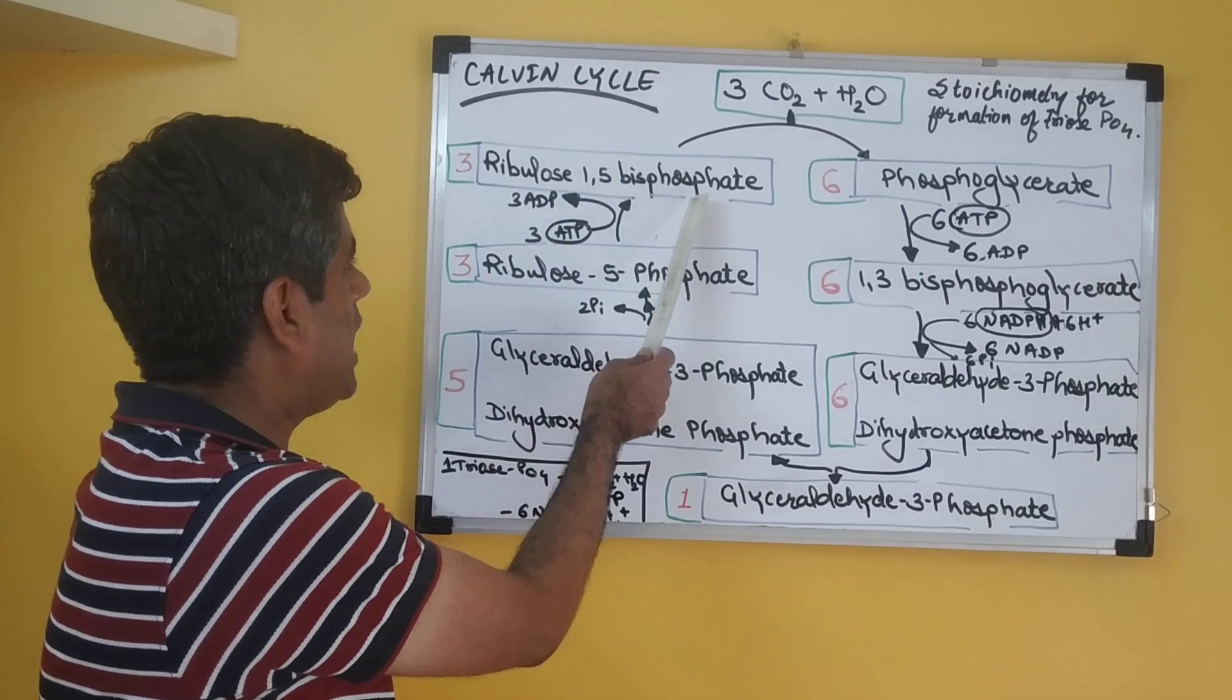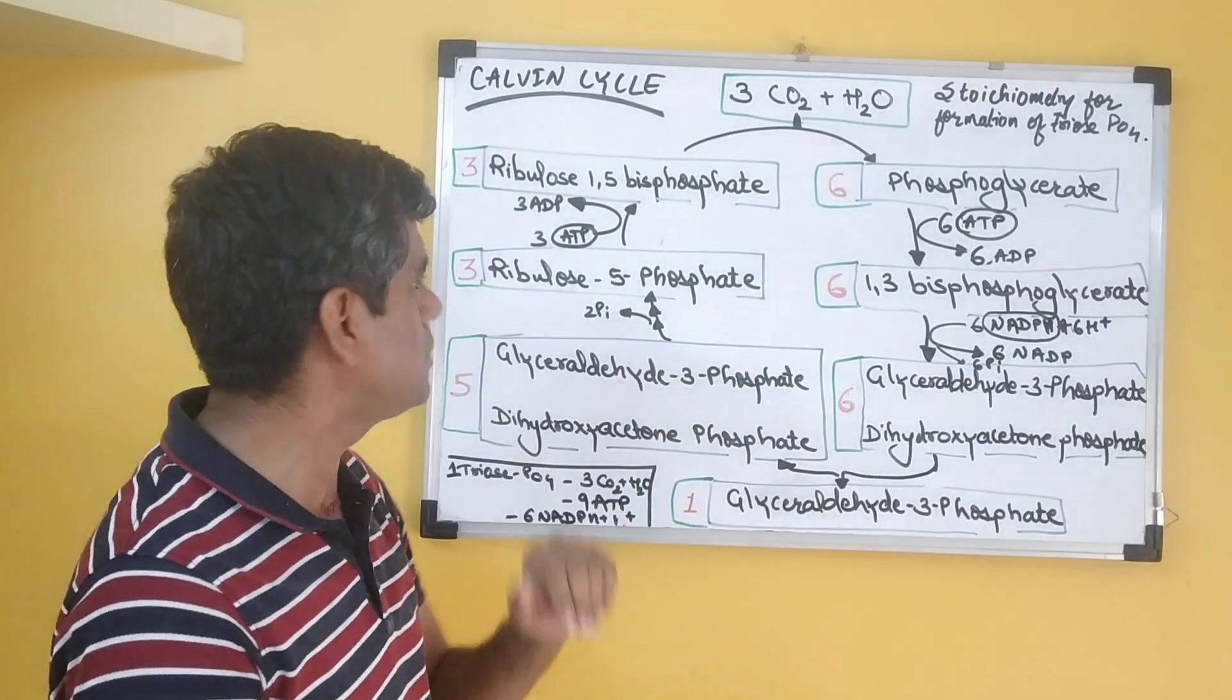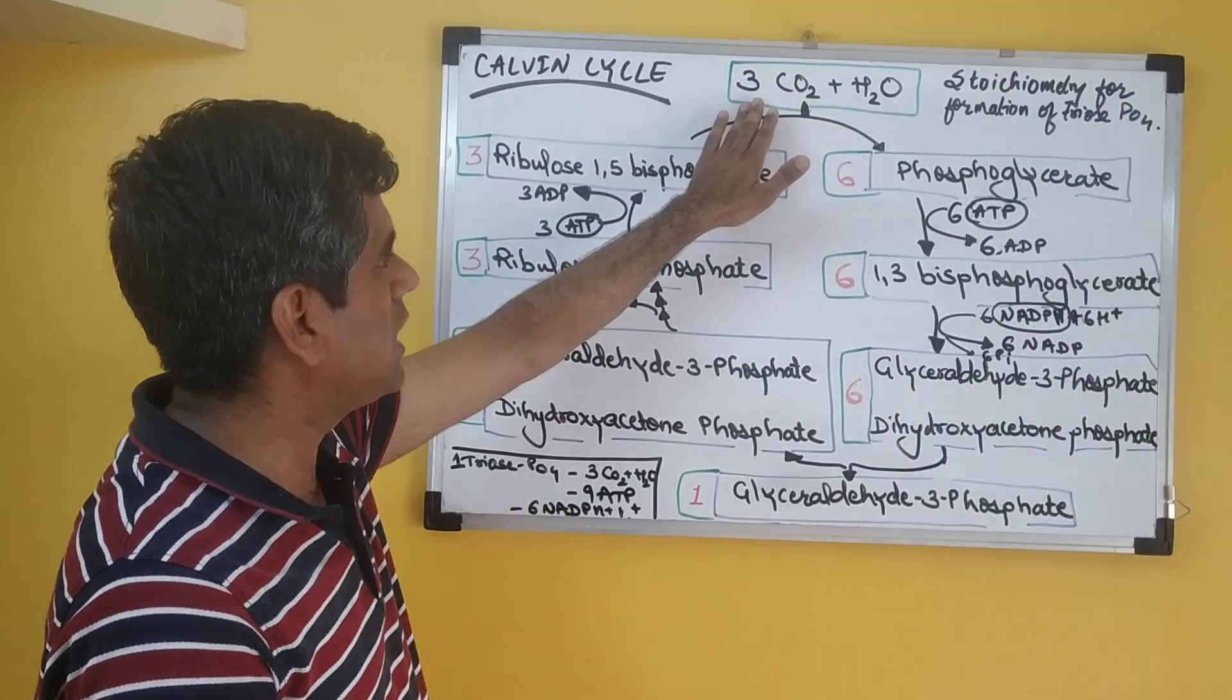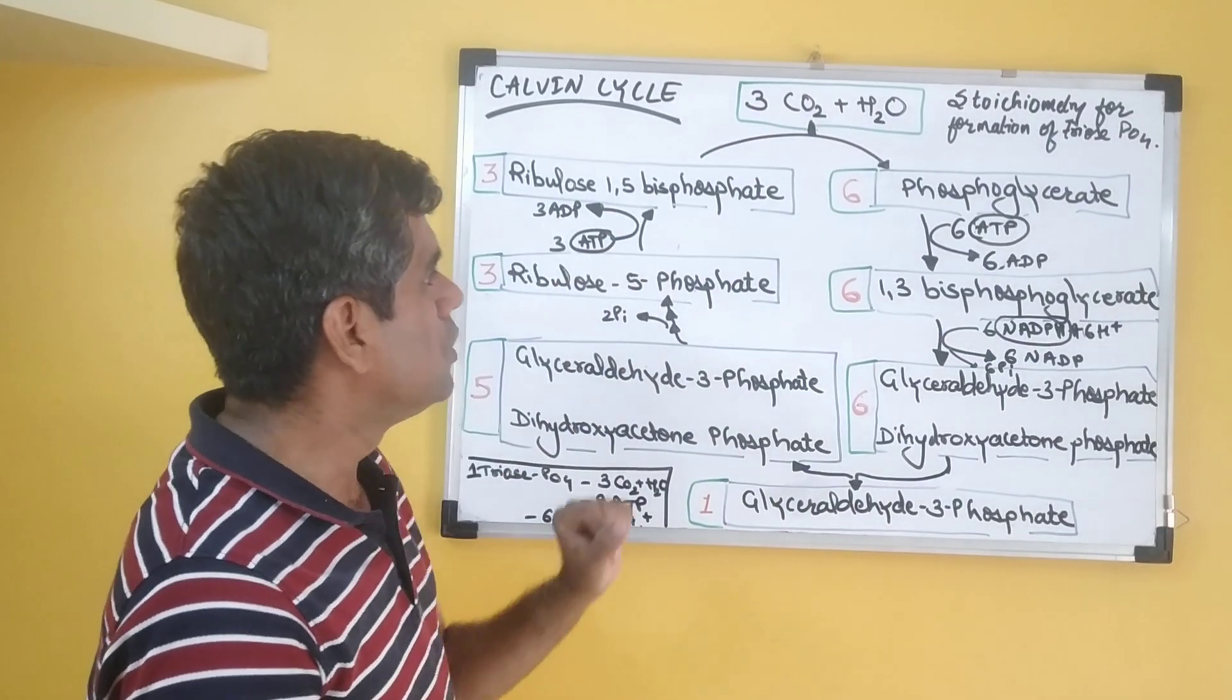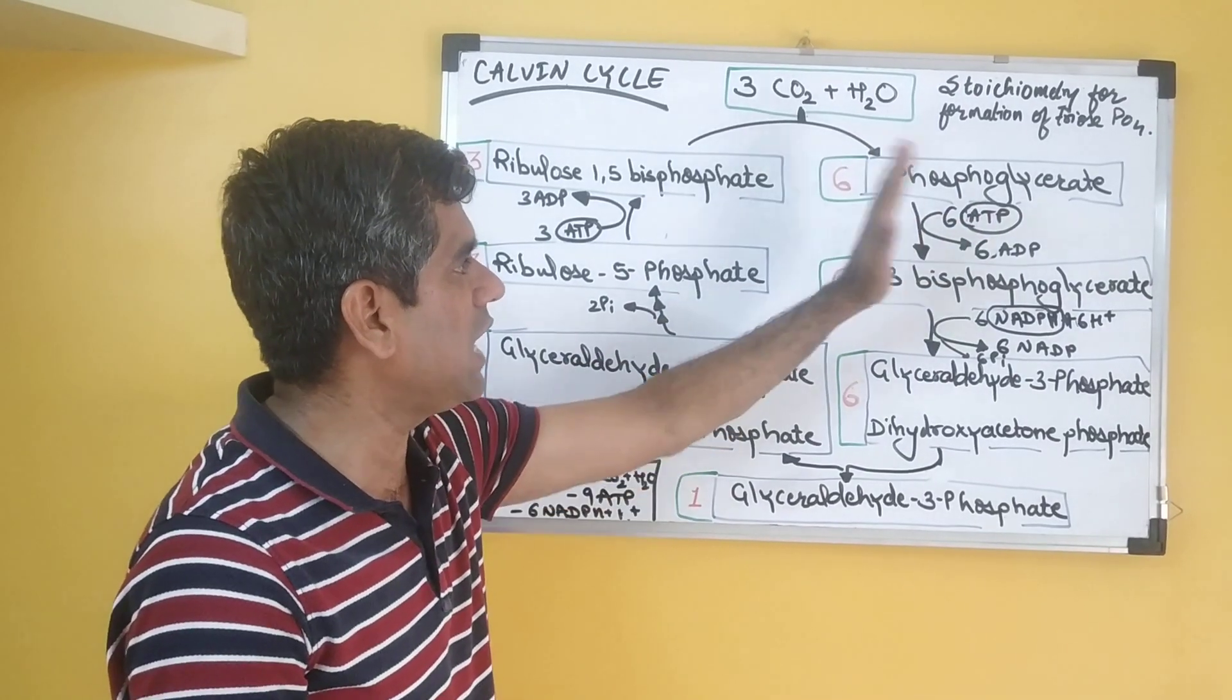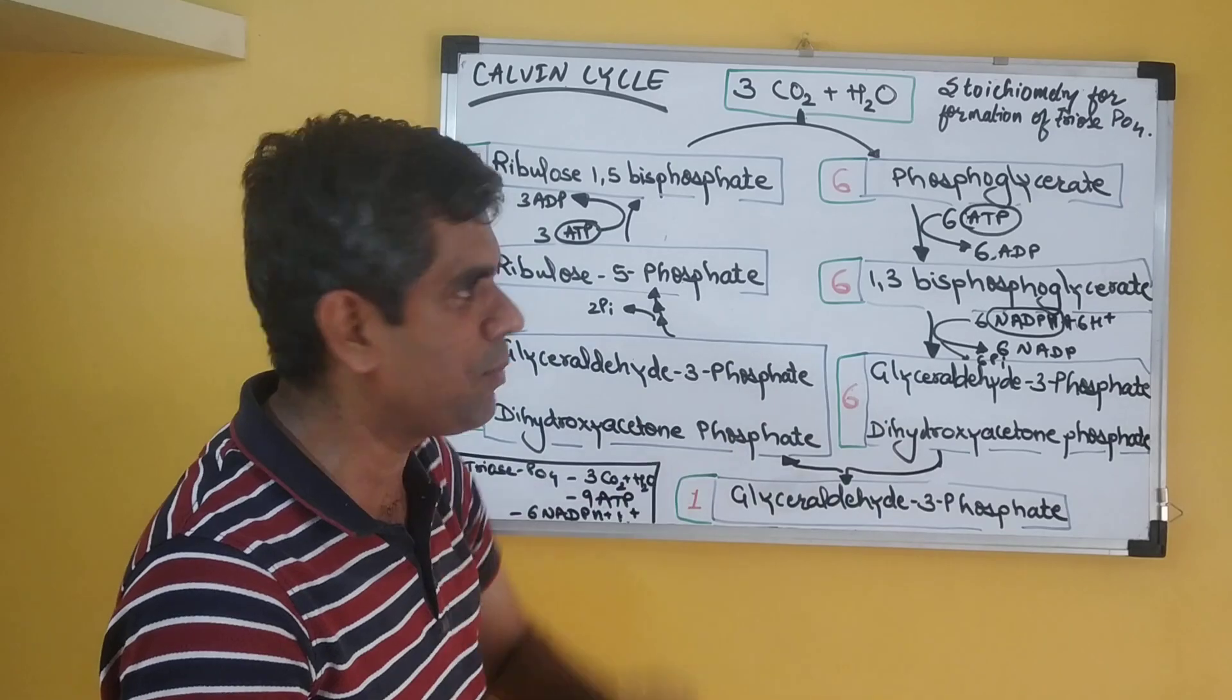So we have three times five—we know that ribulose-1,5-bisphosphate is of five carbon atoms. So three times five, we have 15 carbon atoms. Three carbon atoms are added in the form of carbon dioxide, we have total 18 carbon atoms. With six molecules of 3-phosphoglycerate, we have six times three, that is again 18 carbon atoms. So we are now 15 plus 3, 18 carbon atoms.